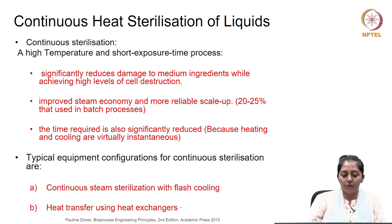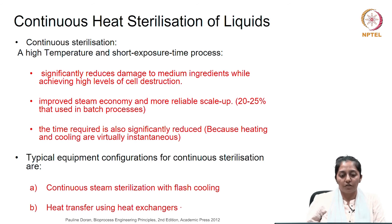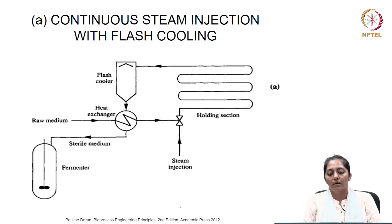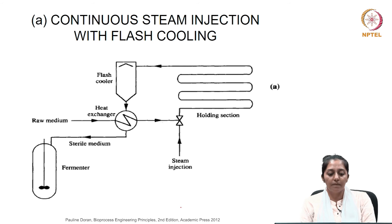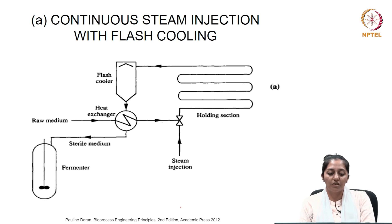The typical equipment configurations for continuous sterilization involve generally two ways: one is continuous steam sterilization with flash cooling and the other is heat transfer using heat exchangers. If you see the figure shown here, it is a schematic for continuous steam injection with flash cooling. The raw medium, before direct sparging of steam inside the medium, passes through a heat exchanger where its temperature is increased close to sterilization temperature by heat exchange from a sterile medium which is being cooled through this heat exchanger.